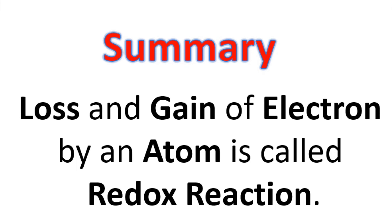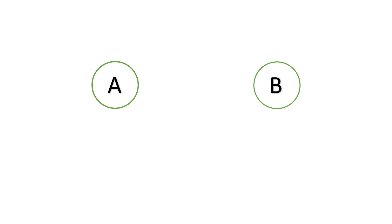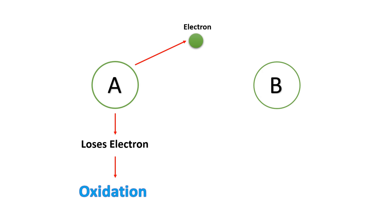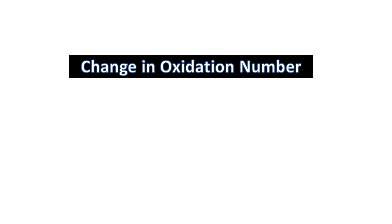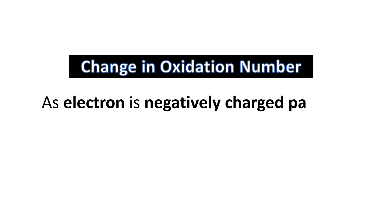We can summarize: loss and gain of electrons by an atom is called a redox reaction. Suppose there is an atom A which tends to lose its electron towards an atom B. When atom A loses an electron, it undergoes oxidation — it gets oxidized. The atom B which gains or accepts the electron becomes reduced. You can also define a redox reaction as a change in the oxidation number.